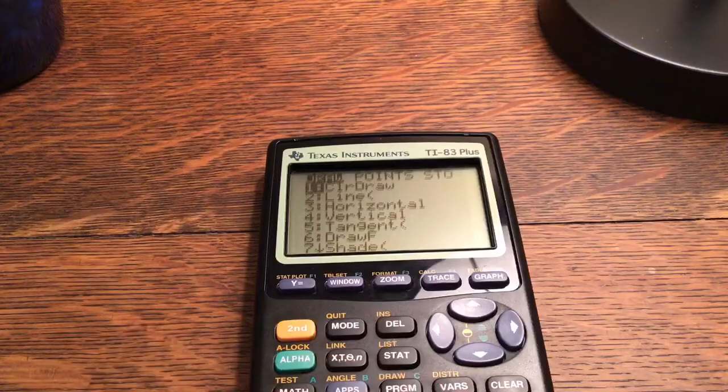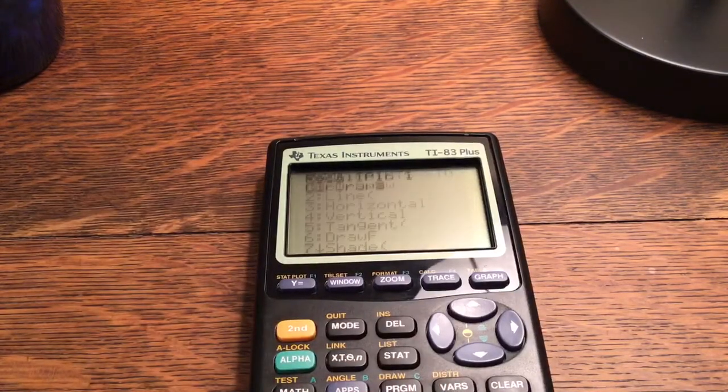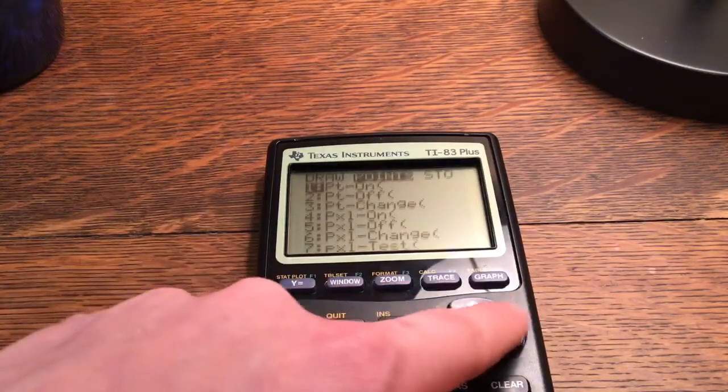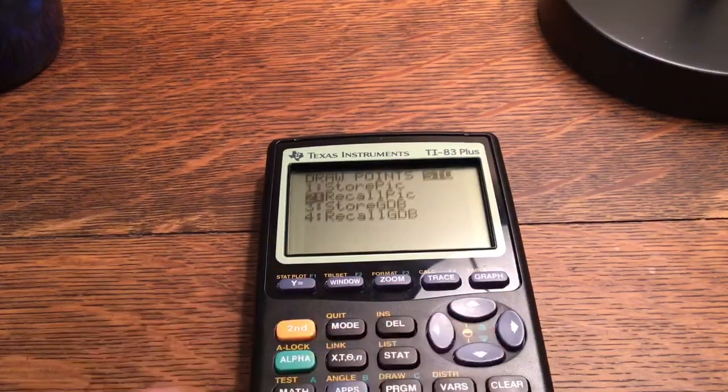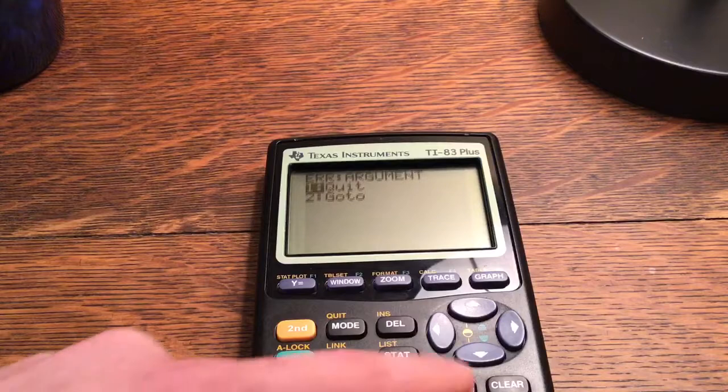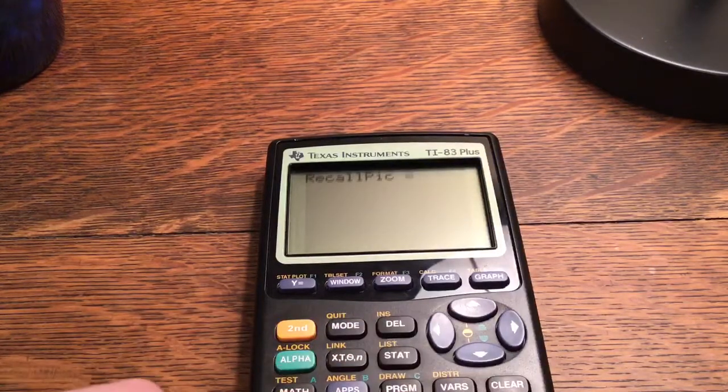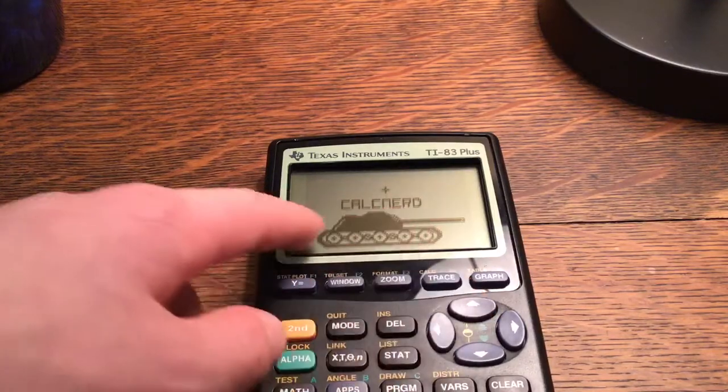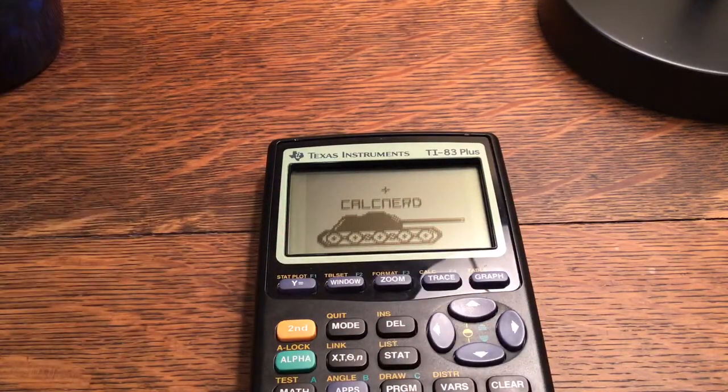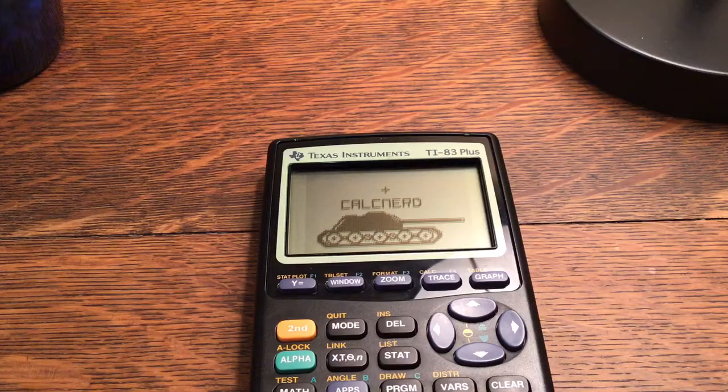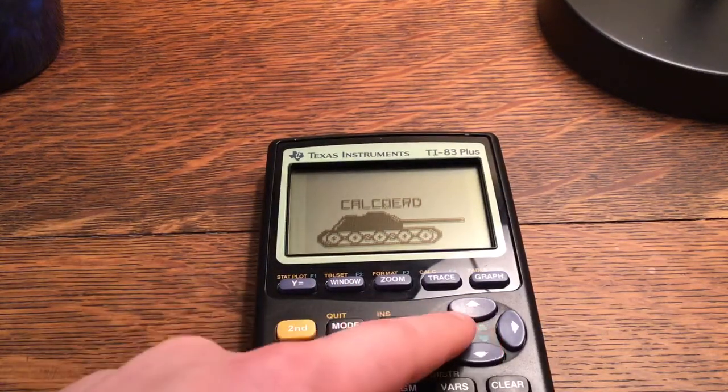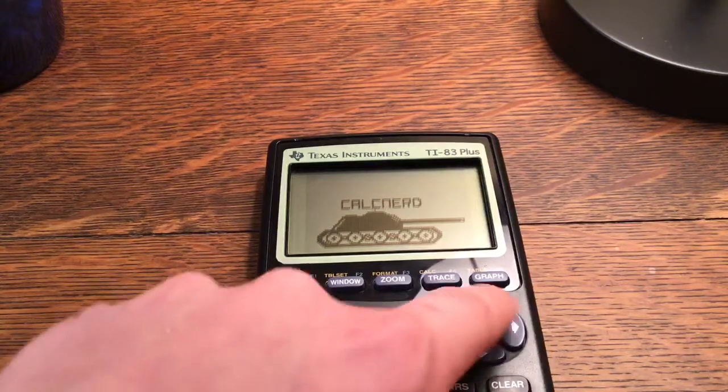So if you want to recall the picture and have nothing else on the screen, first thing you want to do is clear draw. Then I'm going to recall the picture. Recall pic. Oh, whoops. And you have to put the number of the picture that you want to recall. So there is my tank that I drew, which is on a banner of my channel. So yeah, that's kind of cool. And now you can edit this picture freely.